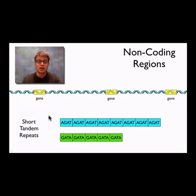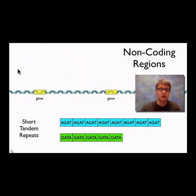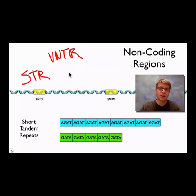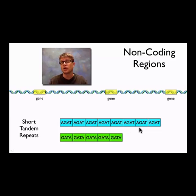An example of one marker we use in DNA fingerprinting is something called short tandem repeats (STRs). Originally we started with something called VNTRs — variable number tandem repeats. Before that we had restriction fragment length polymorphisms. There are a bunch of different things we could look at, but we've moved to the idea of short tandem repeats. They work great and there's quite a bit of variability between individuals. Basically you have letters of DNA that repeat over and over — sometimes 50 times.